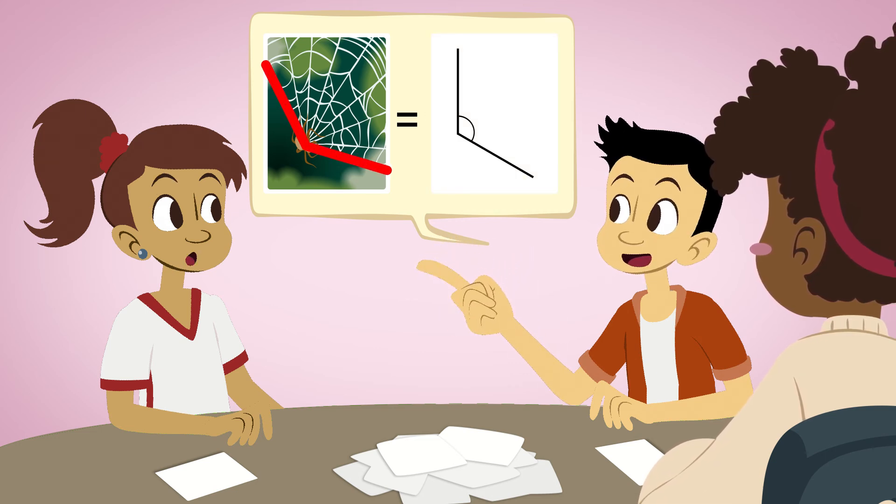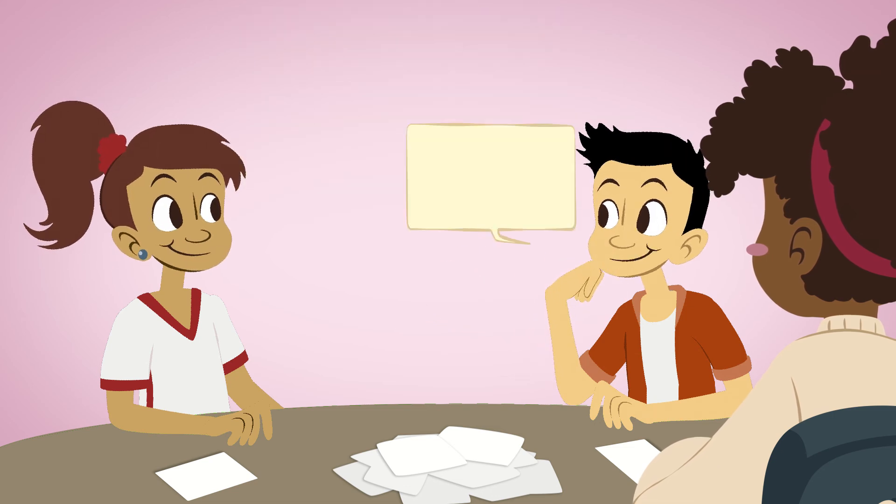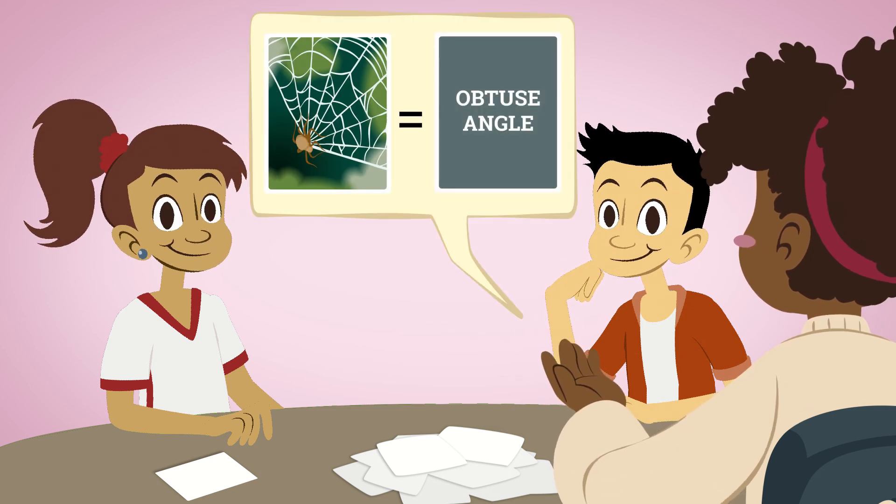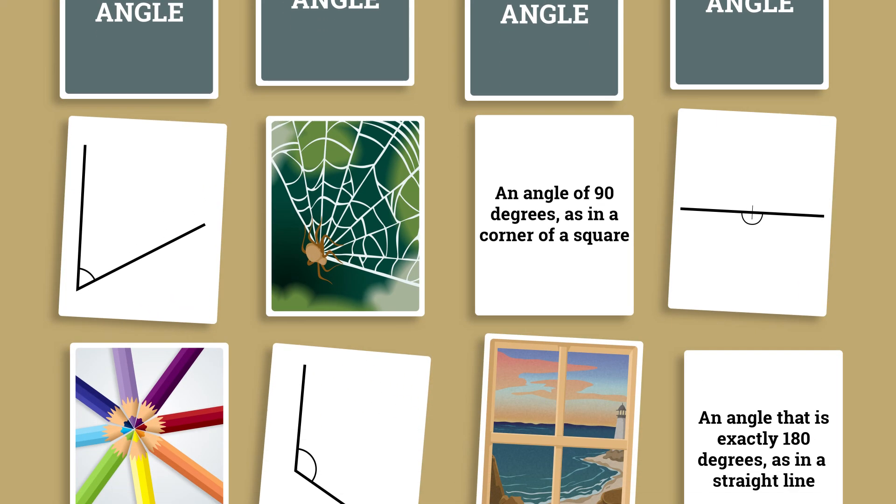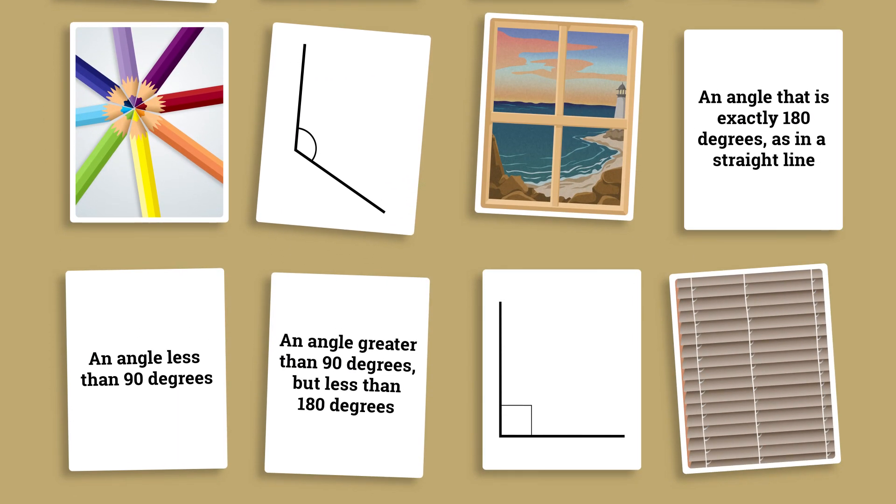The card sort makes it possible for students to see geometric shapes in real life images. Remind the group they need to come to agreement on each card before sorting the next. Once all the cards are sorted, the groups explain their choices to the class.